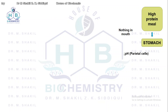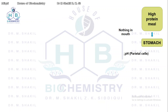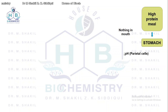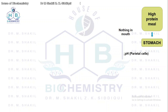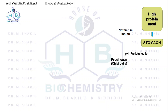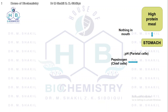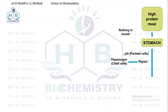The other factor secreted by parietal cells is intrinsic factor. Parietal cells secrete intrinsic factor, which binds to the extrinsic factor in the food — extrinsic factor is vitamin B12 — and helps it get absorbed in the body. In the stomach, chief cells are also present; they secrete pepsinogen, which is converted and activated into pepsin by the acid secreted by the parietal cells. This pepsin acts on the proteins for their breakdown.